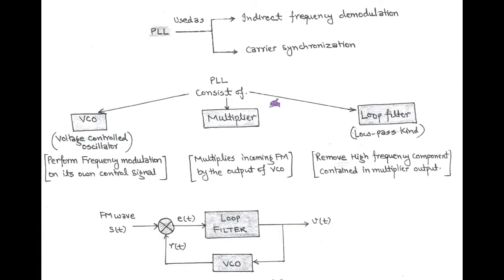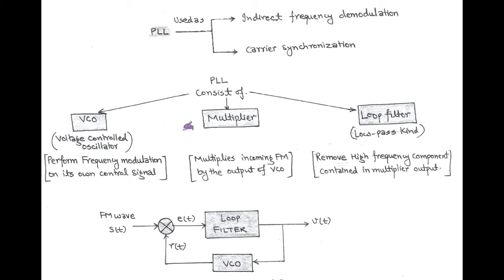On the basis of design, PLL consists of a voltage controlled oscillator, a multiplier, and a loop filter of low pass type. The main function of the voltage controlled oscillator is to perform frequency modulation on its own control signal. The output of the VCO is multiplied by the incoming FM wave with the help of the multiplier.